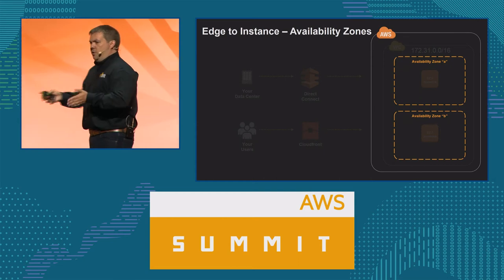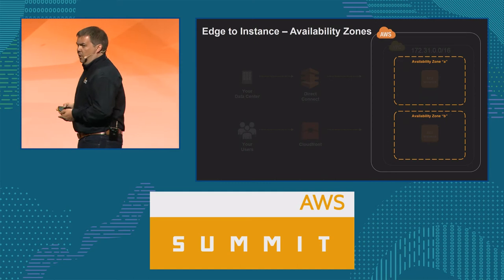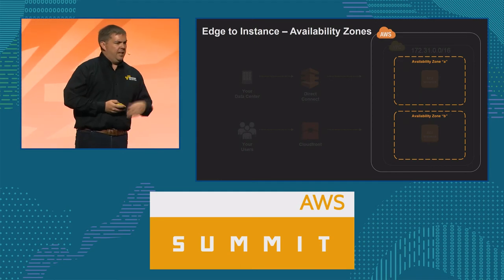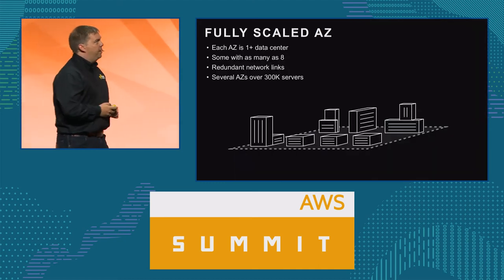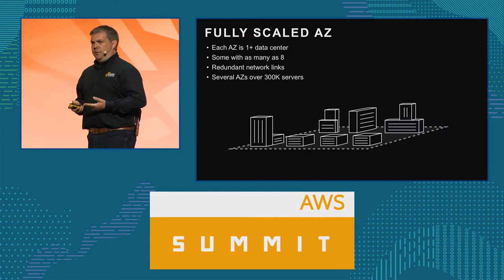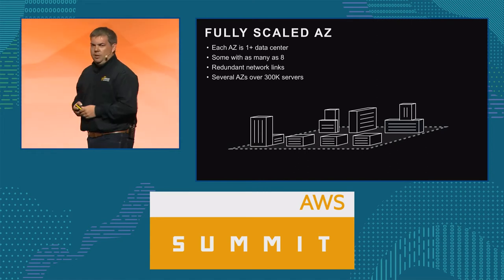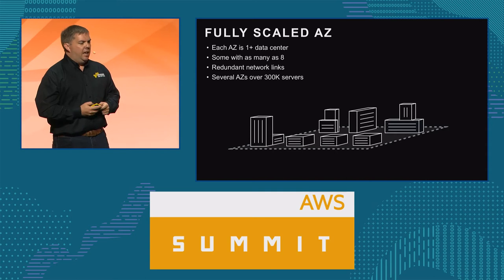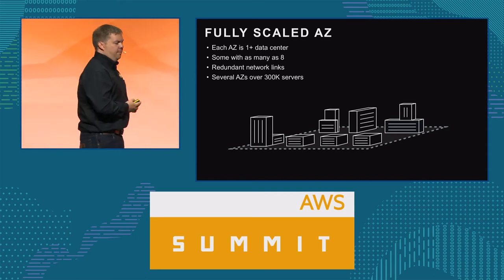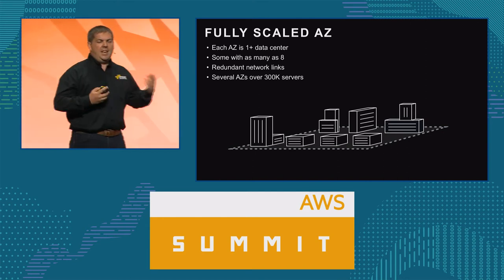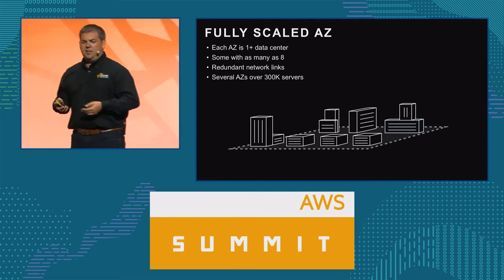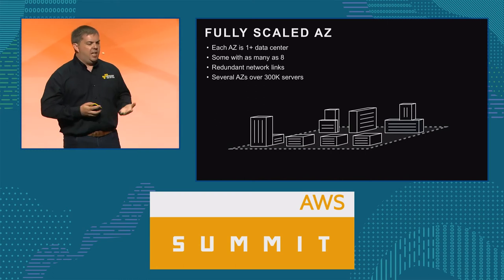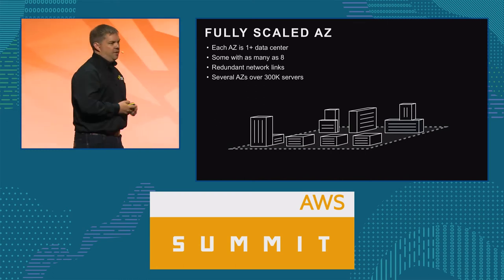Let's go in a little bit closer inside that region and look at an availability zone. In this example I'm showing two availability zones, A and B. An availability zone can actually be one or many data centers — we have some availability zones with as many as eight data centers making up that particular availability zone. The connectivity within that availability zone between the data centers is highly redundant. To give you an idea of the scale, we have some availability zones with over 300,000 servers in them.